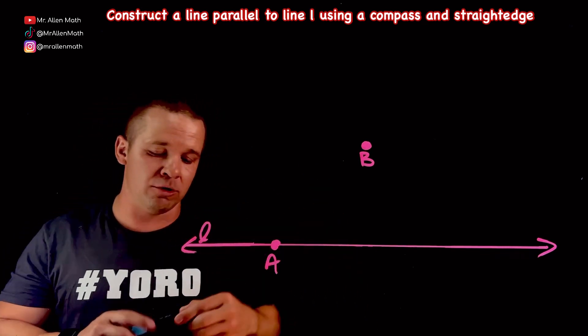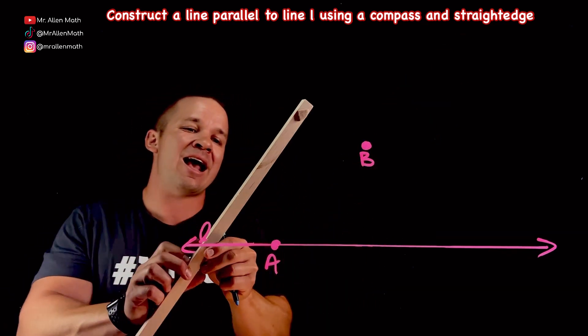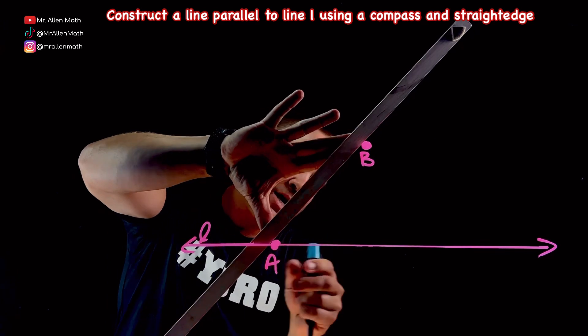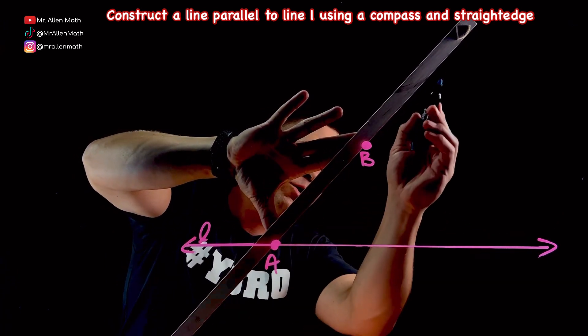So the first thing I'm going to do here, I'm going to take my blue marker for this one, and I'm going to draw a line through A and B. So we're going to use this thing in the construction process. Obviously, this is not the line that is parallel.